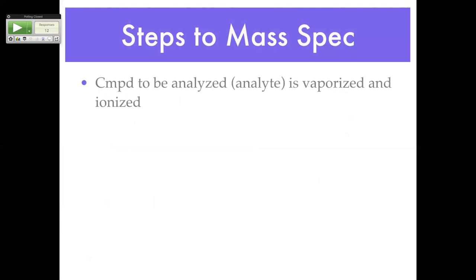Here are the steps for mass spec basically. The compound to be analyzed is referred to as the analyte. It's vaporized and ionized — to vaporize it, we heat it up and put it under a vacuum. There are multiple ways to put your compound into the mass spec. I worked with peptides, so the way I put mine in was called the DIP — direct insertion probe. There was a really long metal tube, and at the very end I put a little bit of my sample.